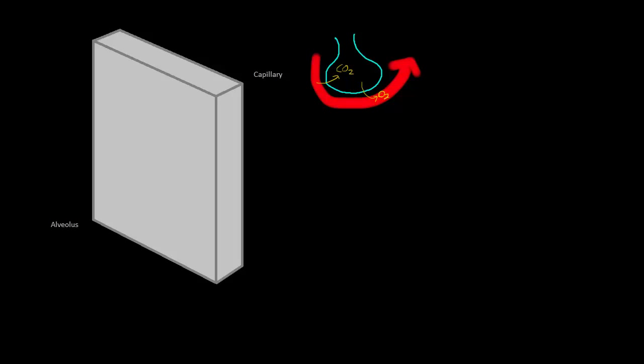And the blood gas barrier is just simply this area here between the alveolus and the capillary. So, this is what we're looking at here on the left side of the screen. I've extrapolated it out for you so that we can manipulate it a little bit and understand how gas crosses this barrier.